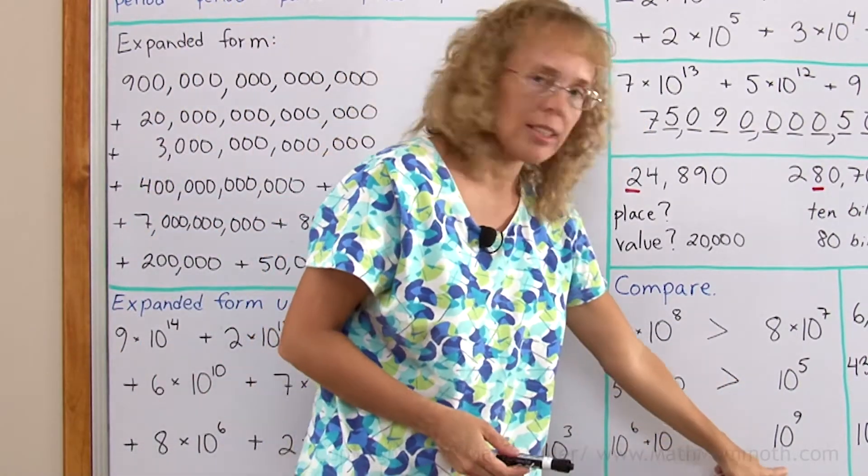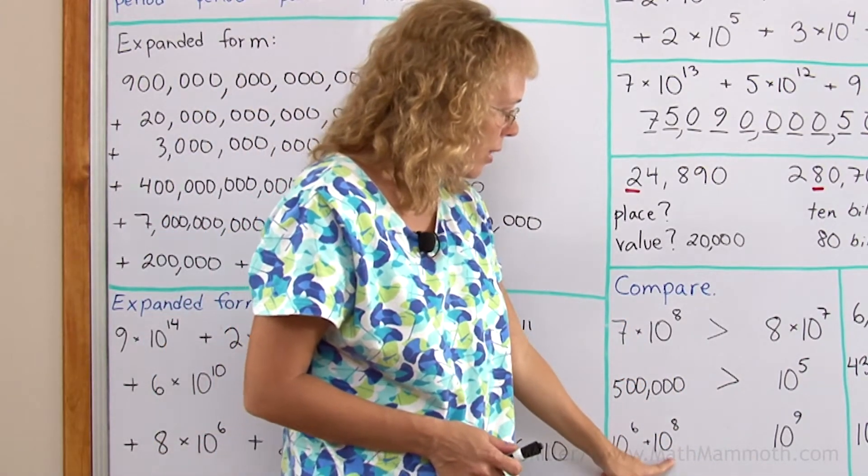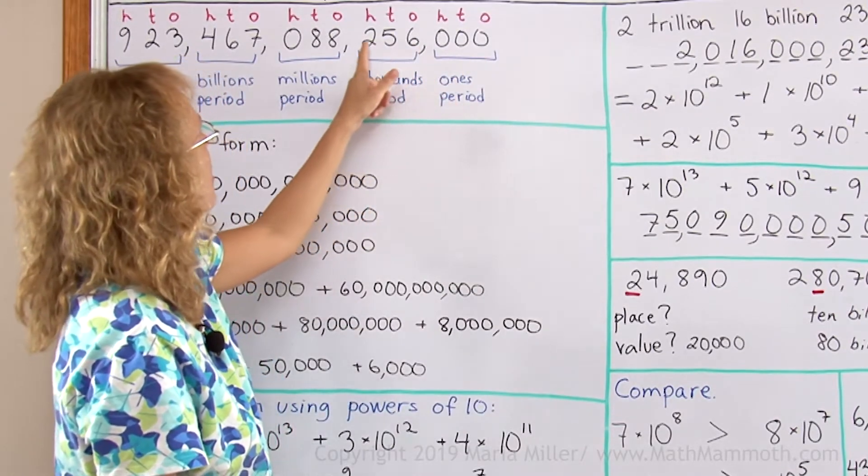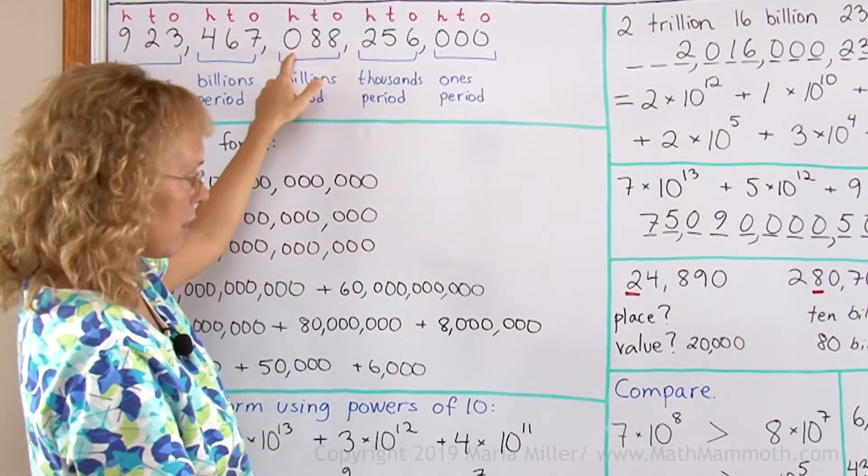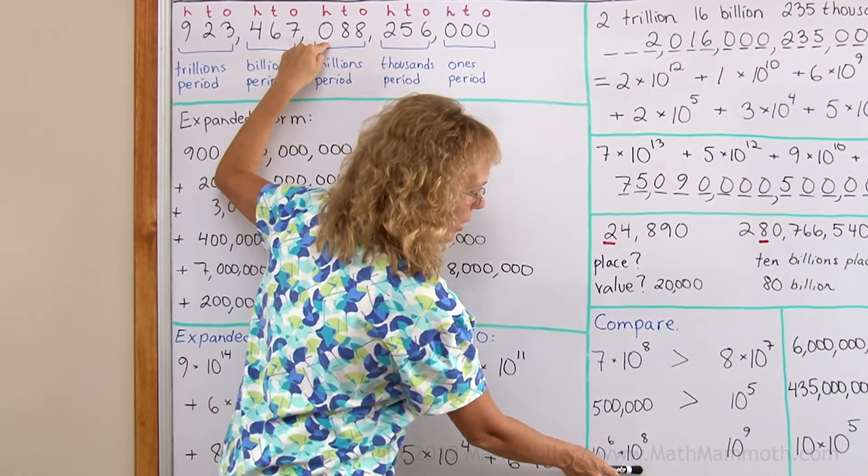Here we have an addition, and then 10 to the 9th power. Okay. 10 to the 8th power would be 8 zeros, and then the digit here. It would be, again, 100 million. This number here is 100 million.